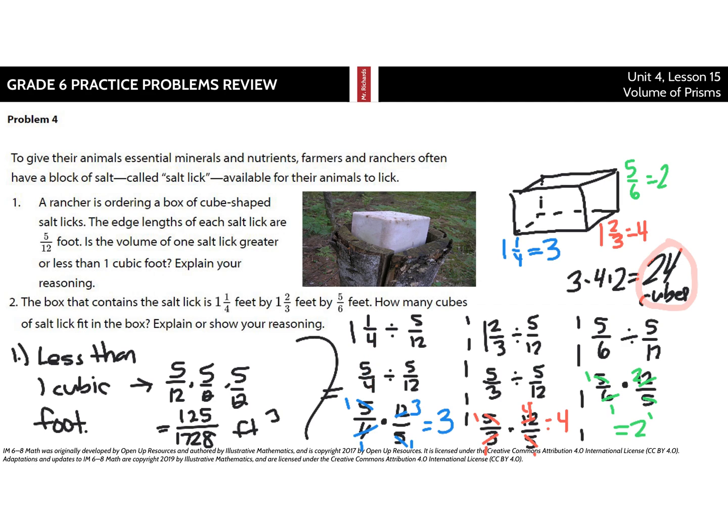And so, one and one-fourth divided by five-twelfths becomes our problem. One and a fourth is five-fourths. Keep, change, flip, you get three. And the same thing throughout here for the other two. You have one and two-thirds divided by five-twelfths. You keep, change, flip, you get four. You have five-sixths divided by five-twelfths. You keep, change, flip, simplify, and you get two. And so, you can fit three along this side, four along this side, two going up. Three times four times two is 24 cubes.